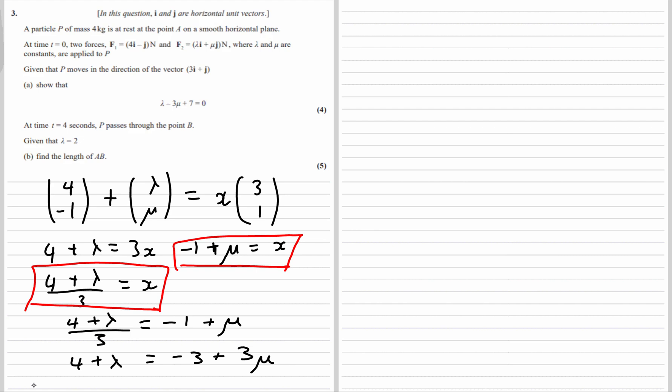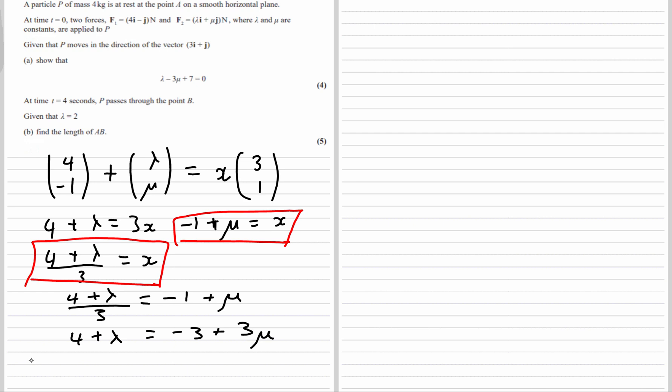4 plus lambda is negative 3 plus 3mu. And I'm almost there. I just need to get everything over to the left side. So I'll have lambda minus 3mu plus 7 equals 0. That's what we wanted.